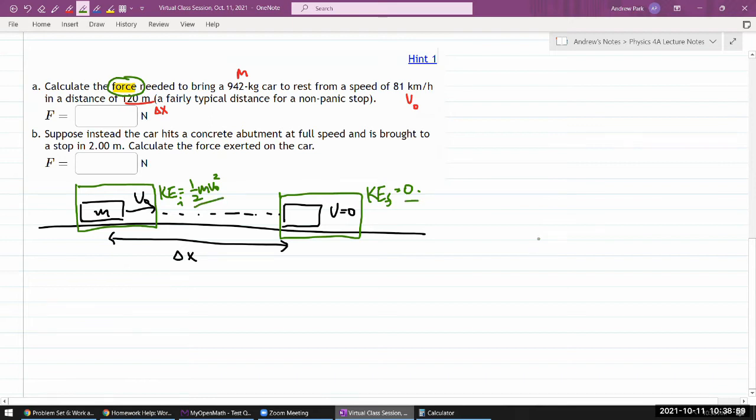So you start out with that statement that the magnitude of work done, I'm saying magnitude so I don't have to deal with the negative signs, the magnitude of work done is equal to the change of kinetic energy or the magnitude of changing kinetic energy. So this is the expression that you are setting up.